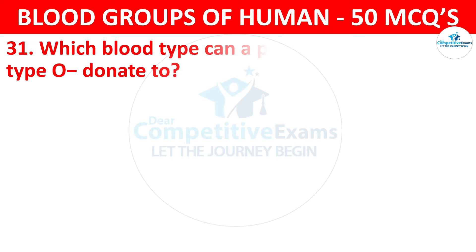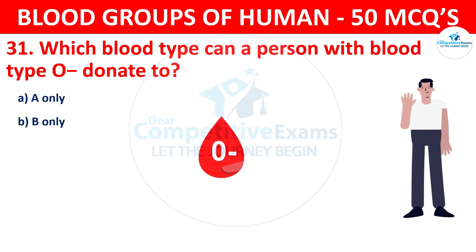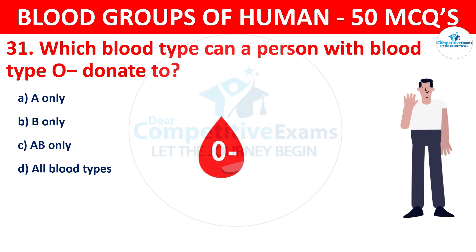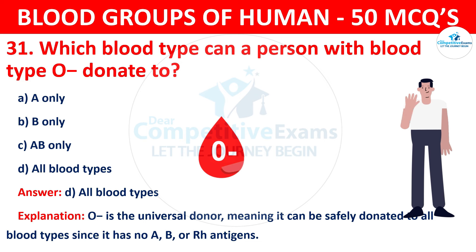Question 31: Which blood type can a person with blood type O negative donate to? The correct answer is D, all blood types. O negative is the universal donor, meaning it can be safely donated to all blood types since it has no A, B, or RH antigens.